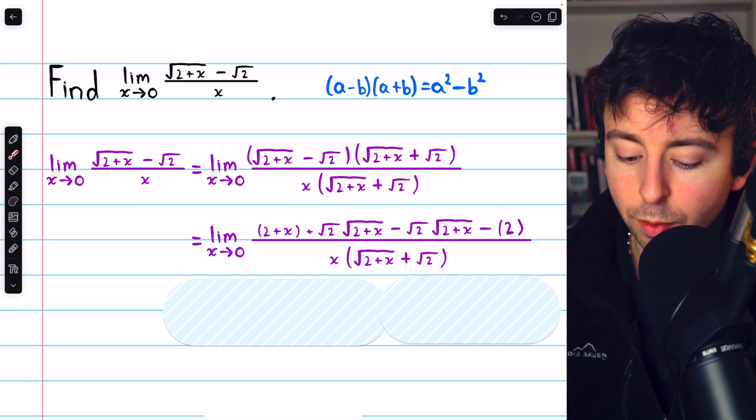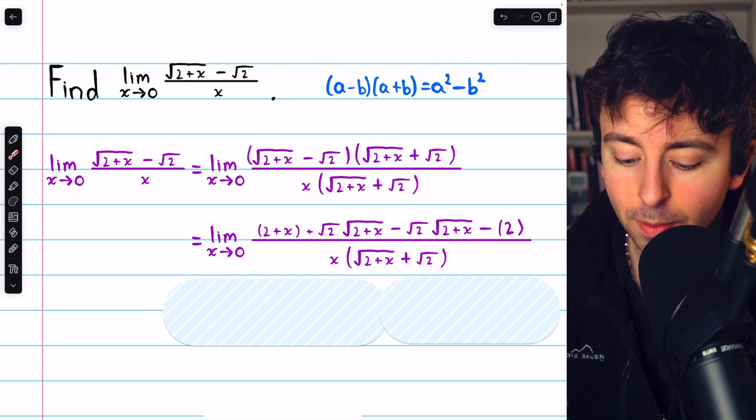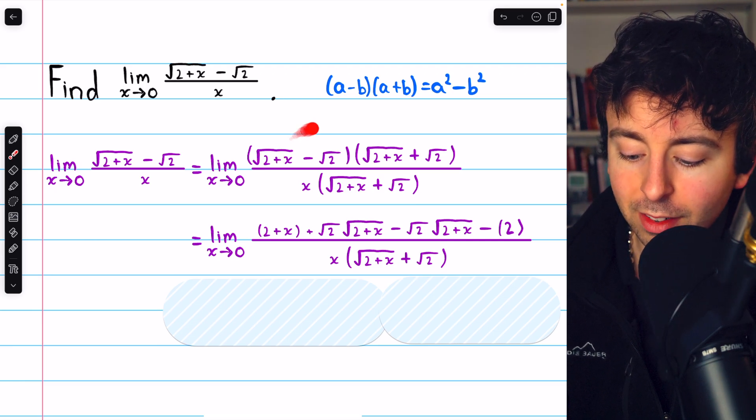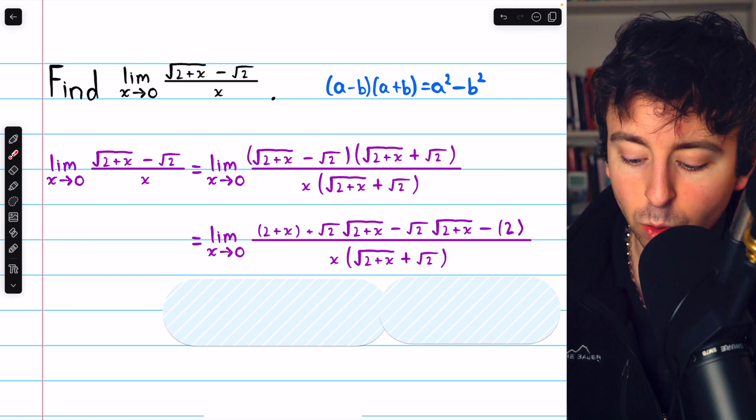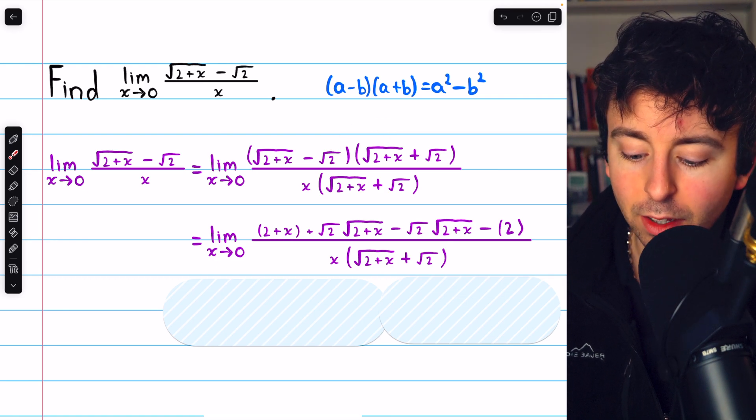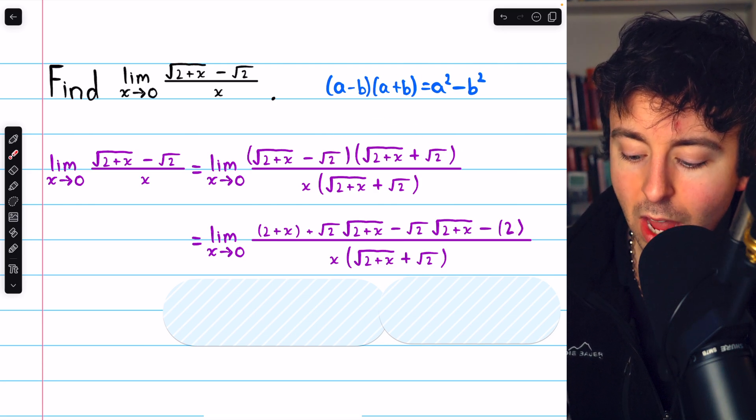Distributing in the numerator, we have √(2+x) times √(2+x), which is just 2+x. Then we have √(2+x) times √2. Then negative √2 times √(2+x). And then √2 times √2 with that negative. The √2 times √2 is 2, so we have minus 2.